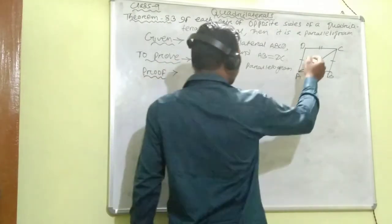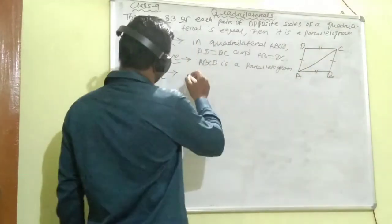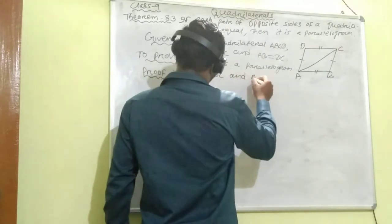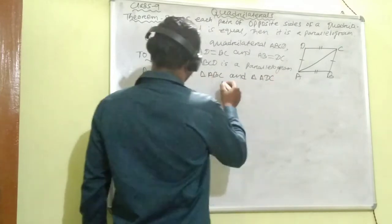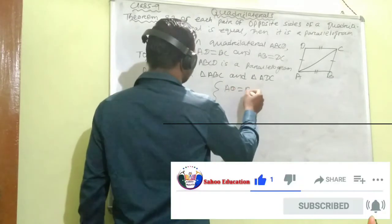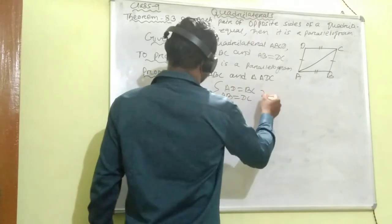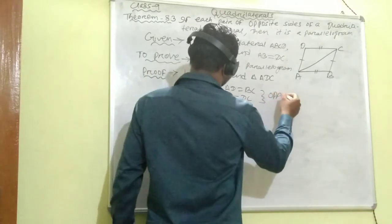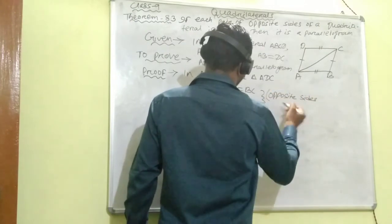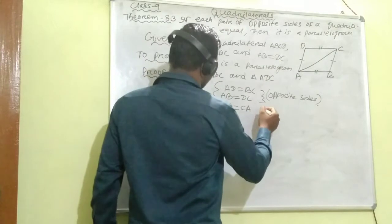In triangle ABC and triangle CDA, what are the three common points? That is given: AD equal to BC and AB equal to DC, these are opposite sides. Next one is AC equal to CA, that is common side.